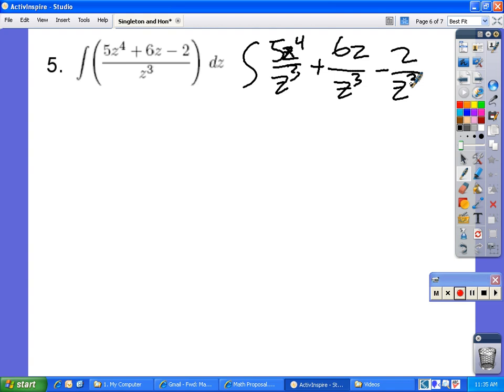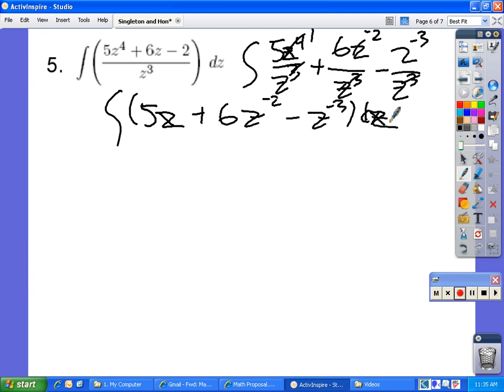In this problem we can divide the powers. If we took out the 3, this would be a power of 1, so it would just be 5z. And if we take this 3 it would just be a negative 3. So this would be negative 2. And if we took negative 3 in this one, this would be negative 3. So this would be 5z plus 6z to the power of negative 2 minus 2z to the power of negative 3 dz.